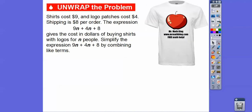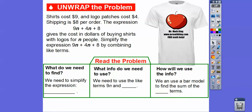Here's a word problem. Shirts cost $9 and logo patches cost $4, and shipping is $8 for the order. The expression 9n plus 4n plus 8 gives the cost in dollars of buying shirts with logos for n people — $8 for shipping, $9 per shirt, and $4 per logo. We need to simplify the expression 9n plus 4n plus 8 by combining like terms.